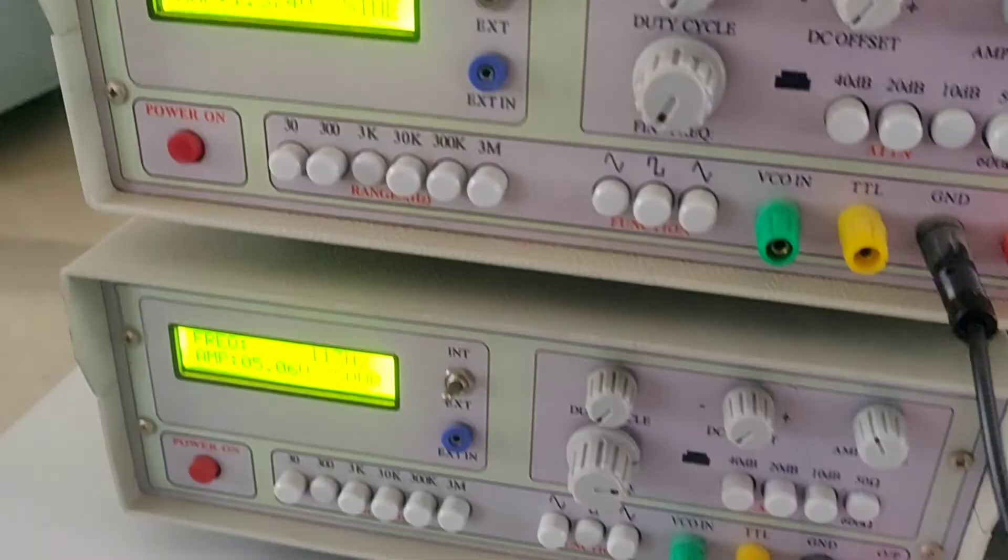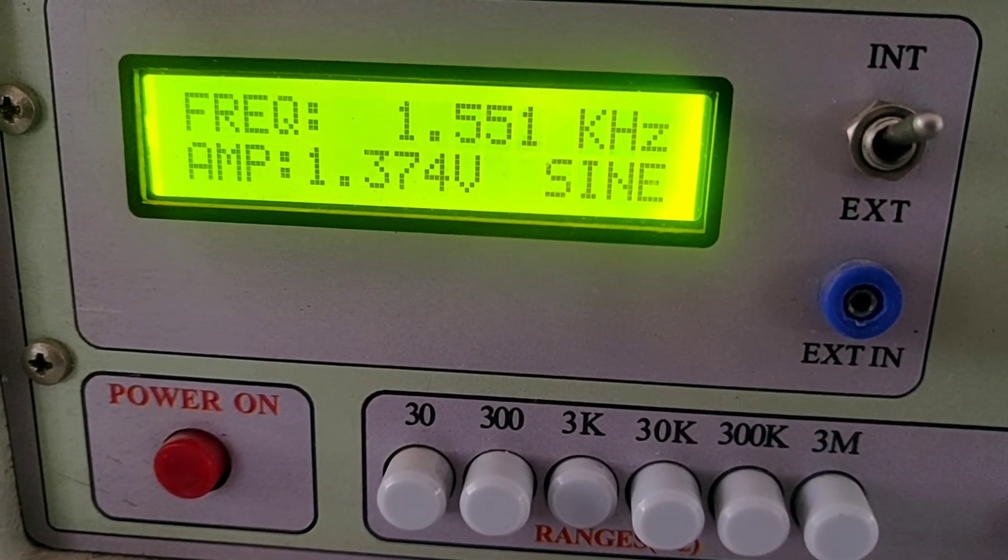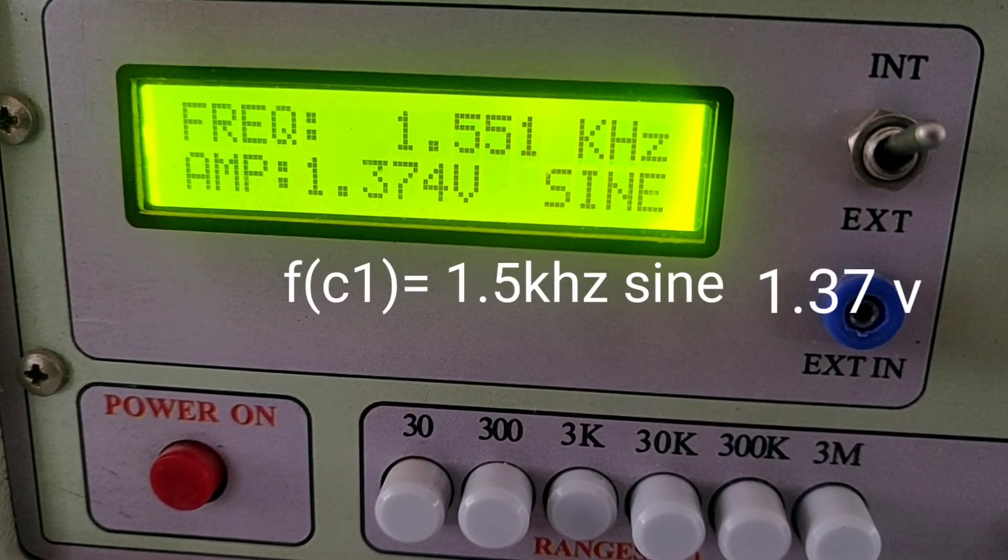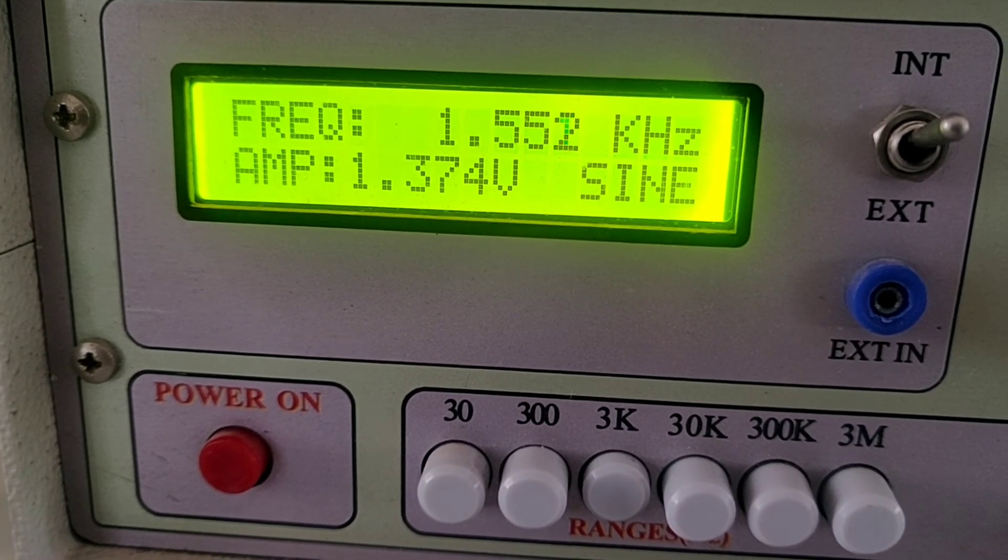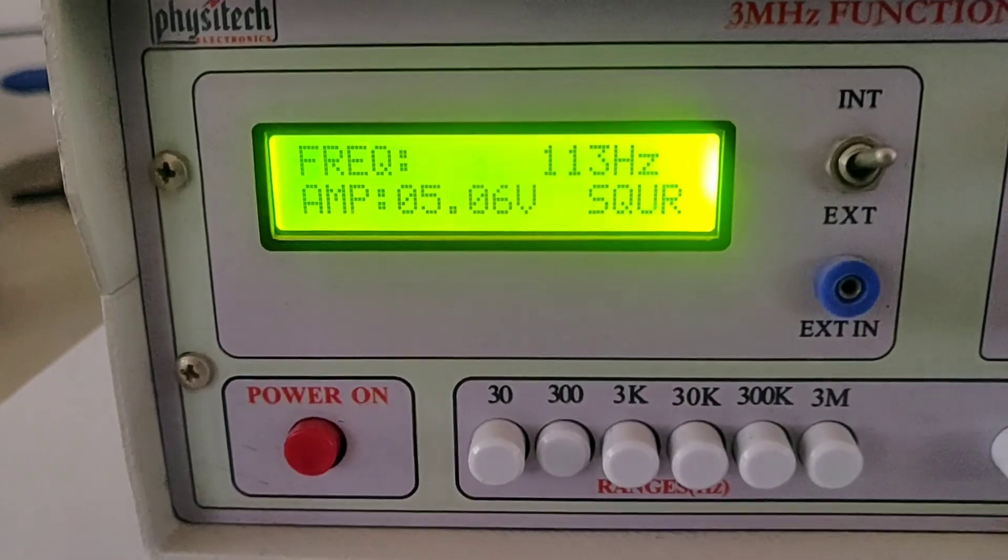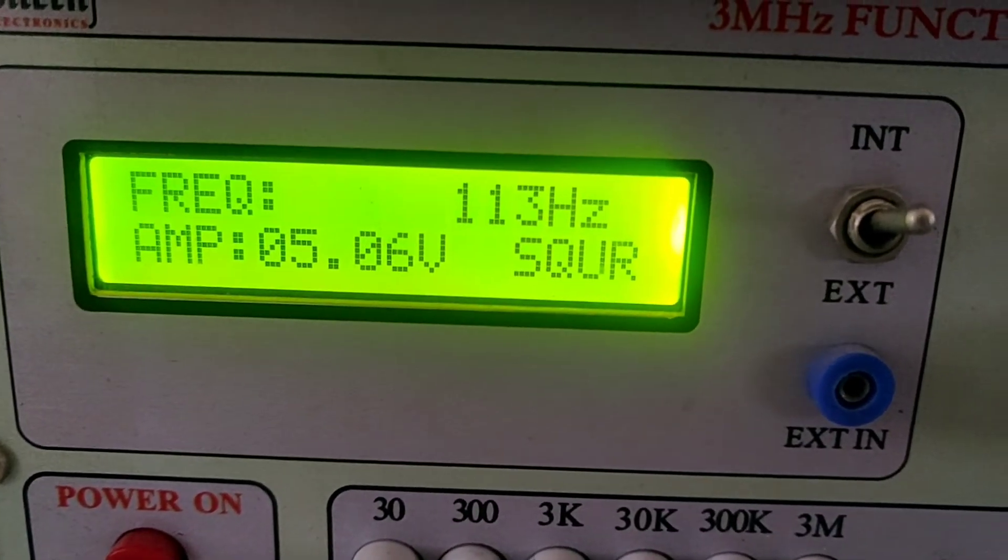Let us see what are the parameters we have to set for input. See, this is a sine wave. We are going to give you at the specification of 1.5 kilohertz sine 1.37 volts and a data, binary data actually, set at 100 hertz square, 5 volts peak to peak.